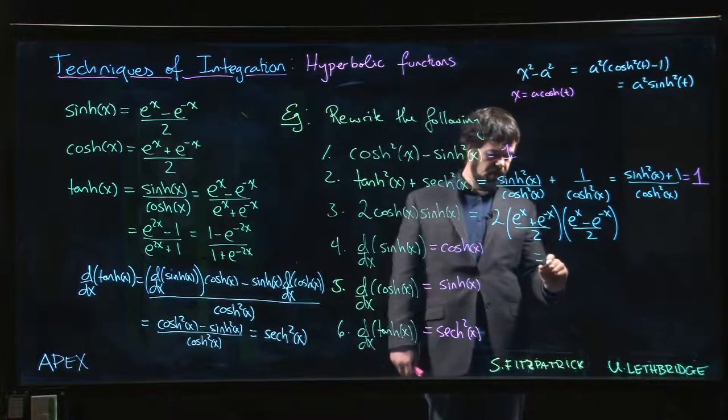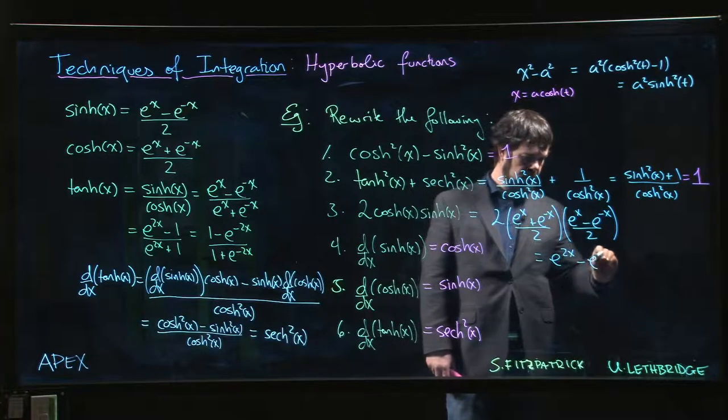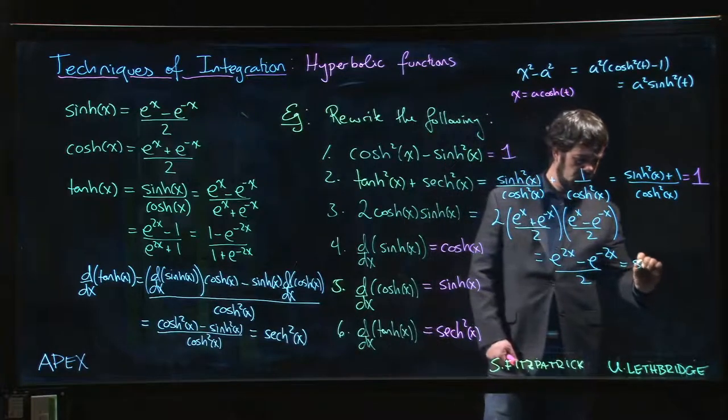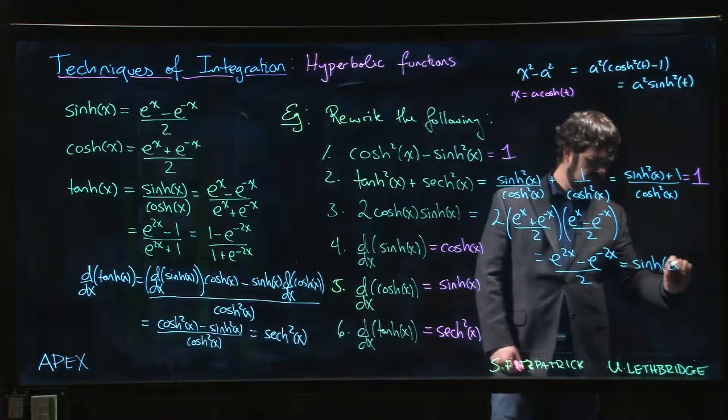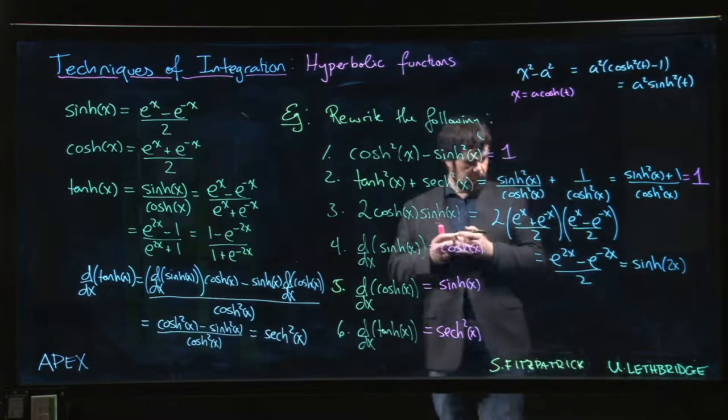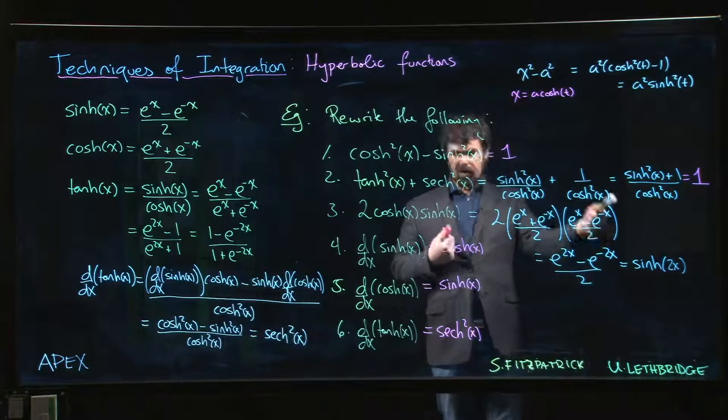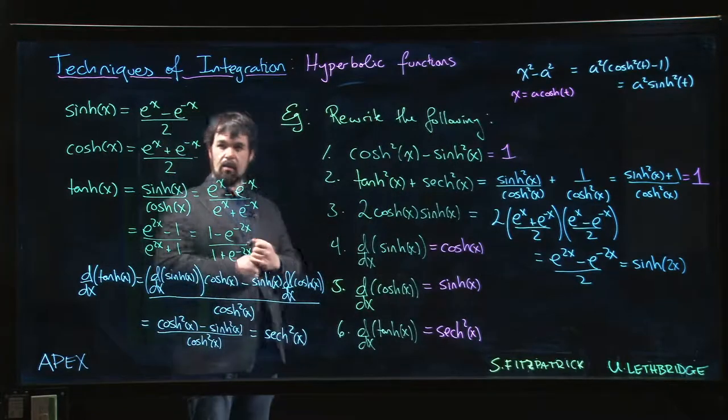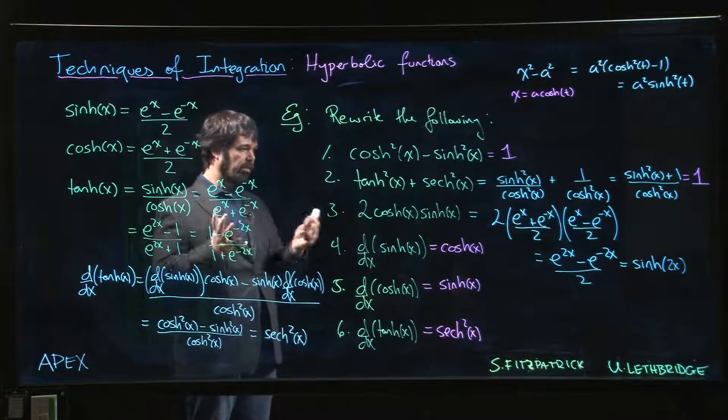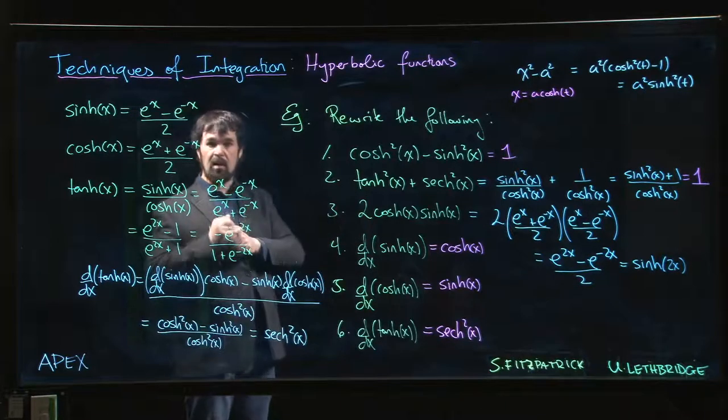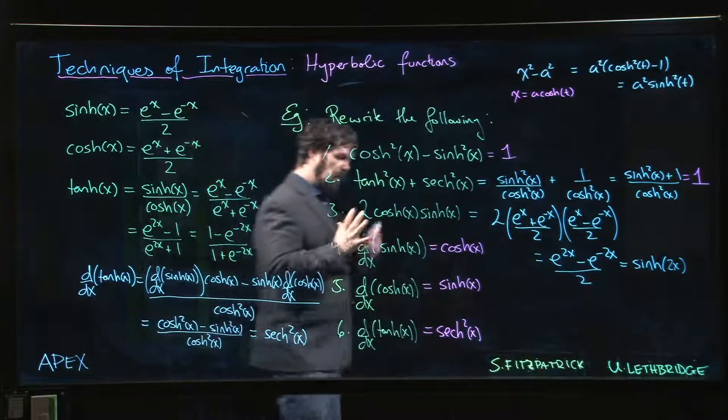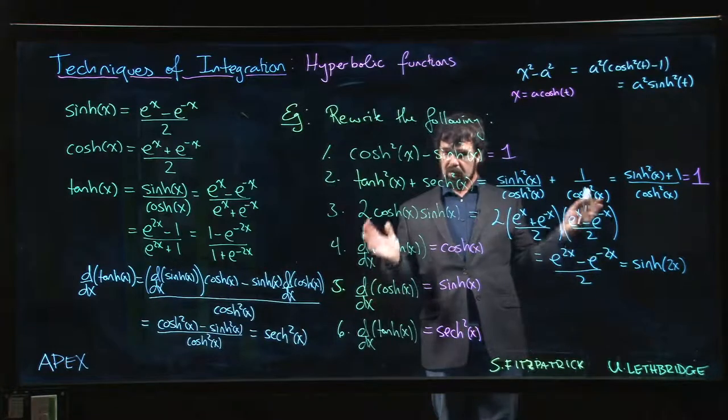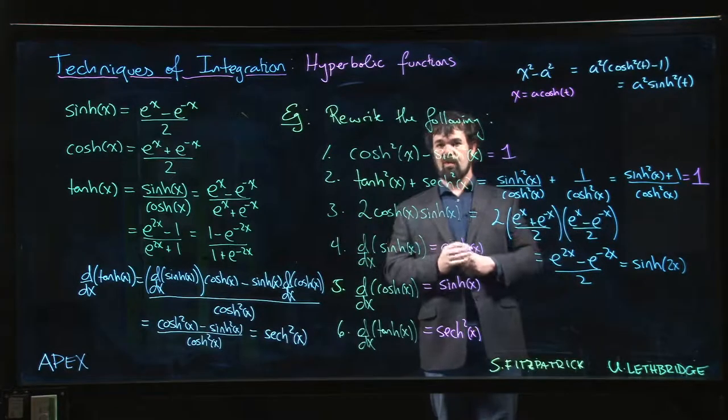So what we actually get is e to the 2x minus e to the minus 2x over 2, which is sinh 2x. So the hyperbolic sine function satisfies that same double angle identity that we had for trig functions - sine 2x is 2 sine x cos x, and we have the same for hyperbolic functions as well. So there are a number of useful properties like this. We've derived some of them, there are others you can find listed in the textbook. We won't do them all in the videos, but this gives you a sample of some of them.